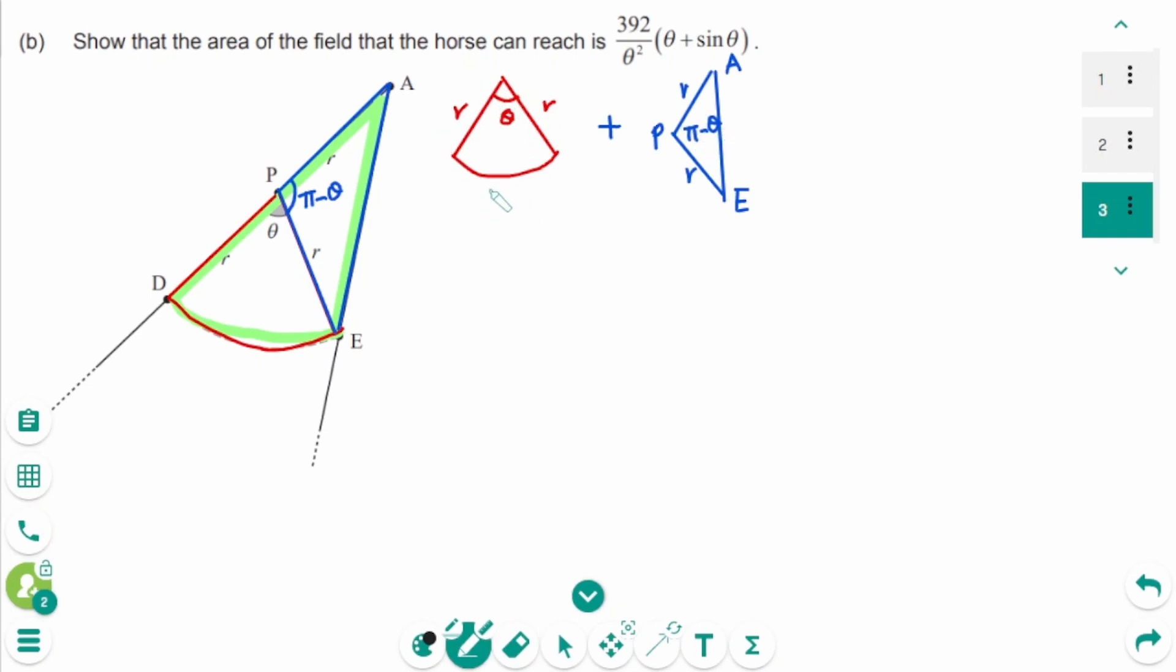The area of the sector is 1 over 2 R squared theta. Use the formula in triangle ABC where the side lengths are A, B, C.